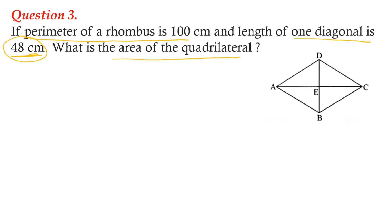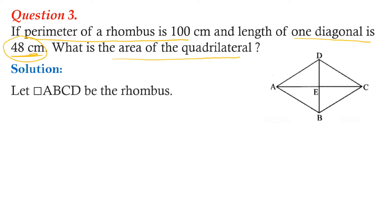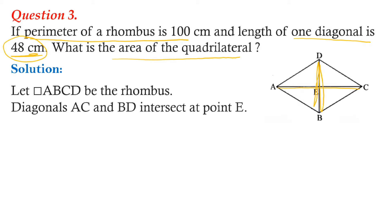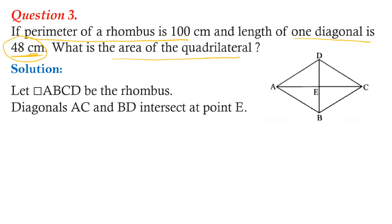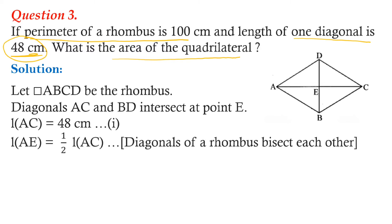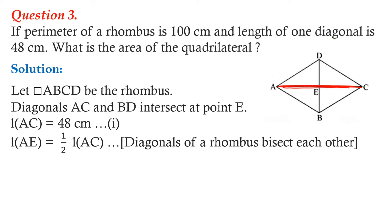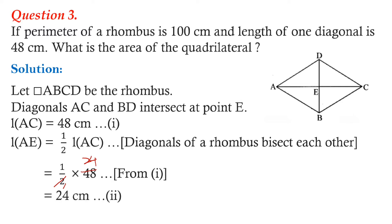We assume ABCD is a rhombus. The diagonals AC and DB intersect each other at point E. We find the length of AE, which will be half of AC because the diagonals of a rhombus bisect each other. Therefore, AE equals half of AC, which is half of 48. Cancelling 48 by 2 gives us AE equals 24 centimeters.